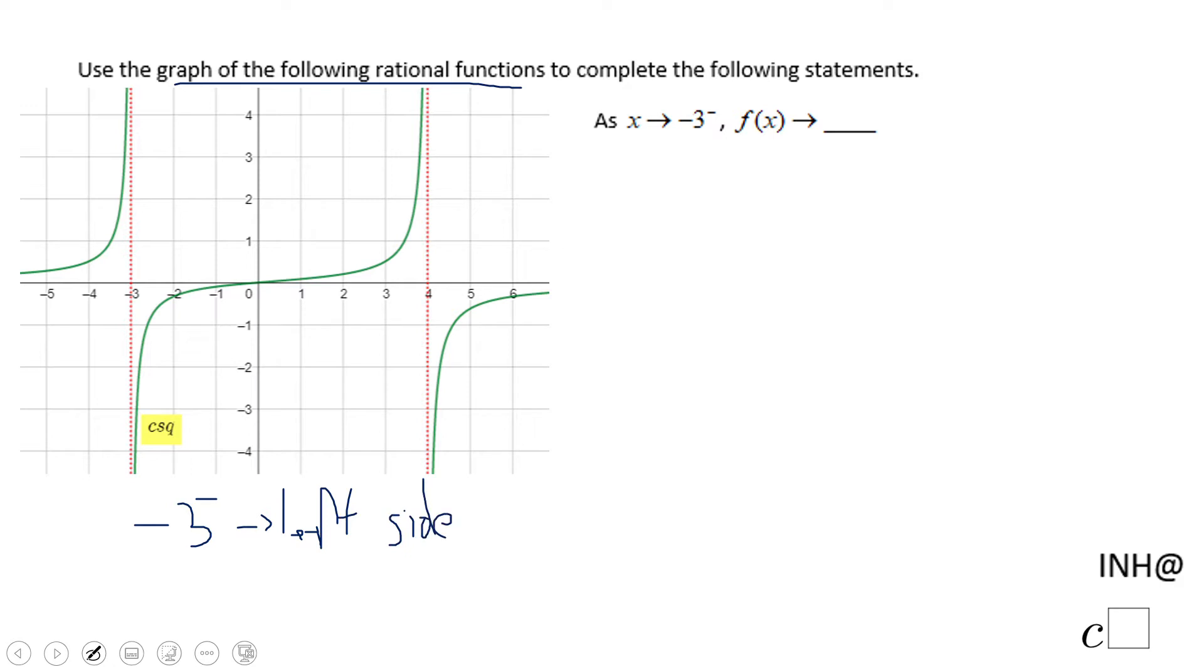So we're looking here and they ask us, if I go close to negative three, you see it here. Let me change it a little bit. If I go close to negative three from the left side, how does the graph behave?